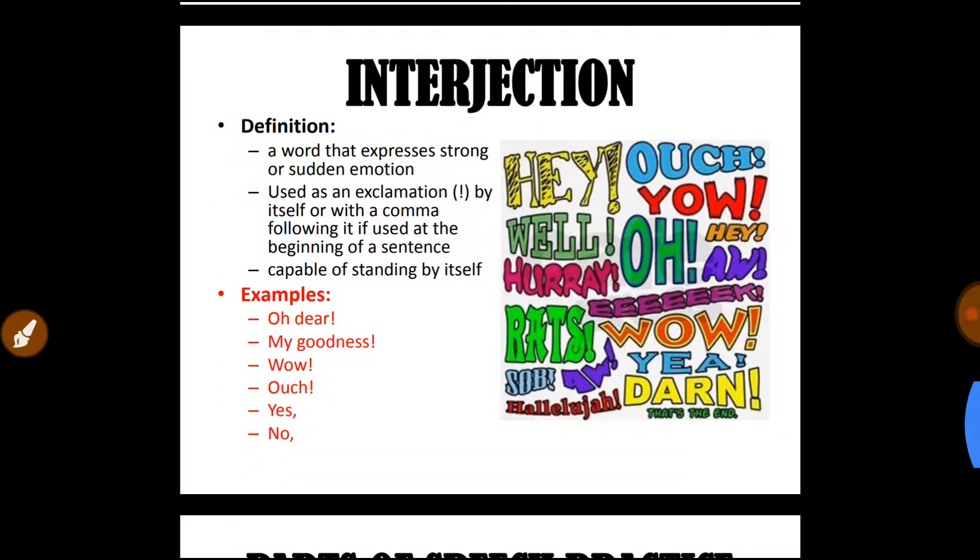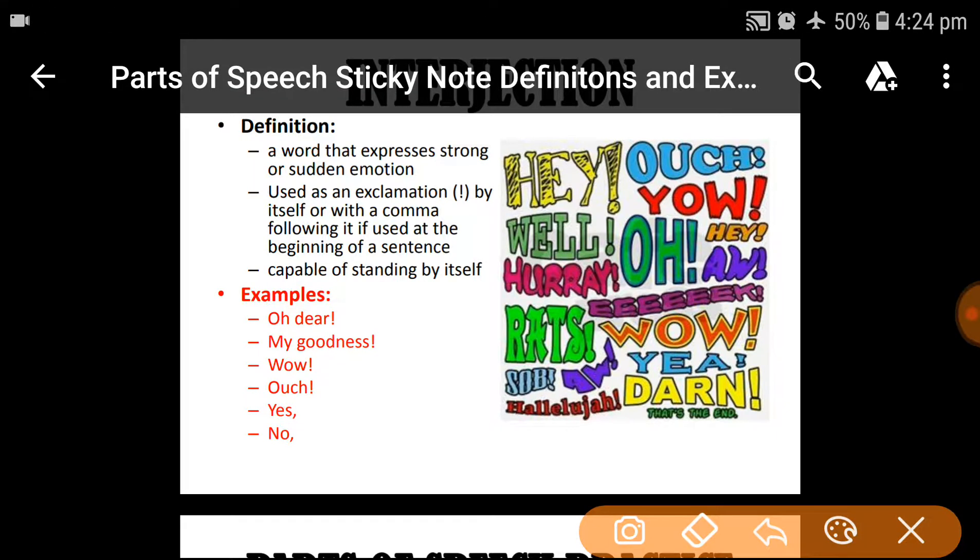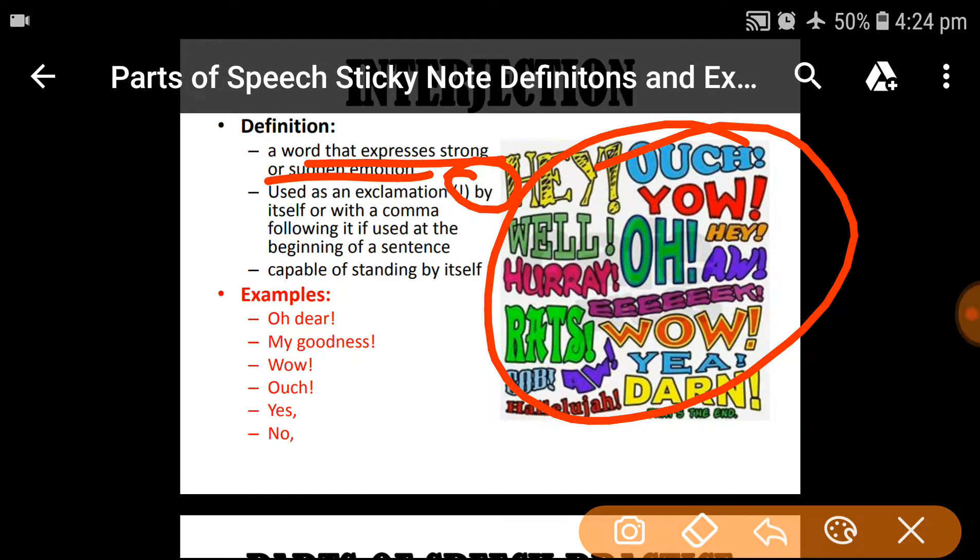Next is interjection. These are some exclamatory words or sudden feeling of your mind. They show a word that expresses strong feeling or sudden emotions that are called interjections. Use exclamatory sign or comma to follow. It is used at the beginning of the sentence. We always use interjection at the beginning of the sentence. Capable of standing by itself.